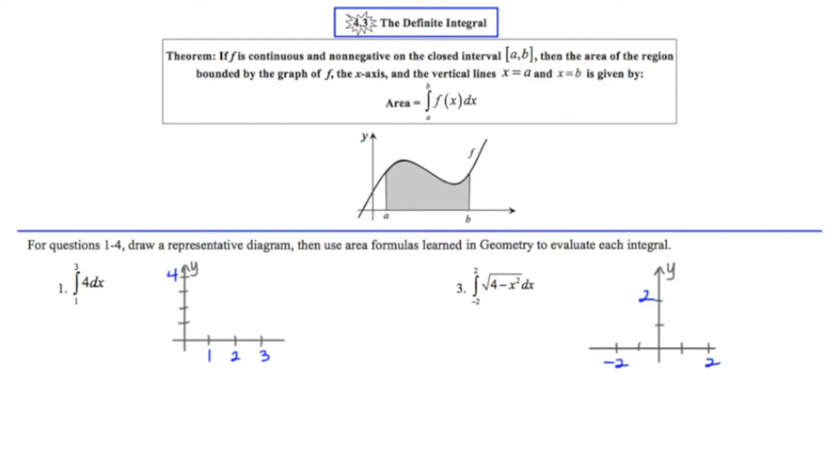The theorem states if f is continuous and non-negative on the closed interval from a to b, then the area of the region bounded by the graph of f, the x-axis, and the vertical lines x equals a and x equals b can be found by evaluating this thing called a definite integral starting at a and ending at b.